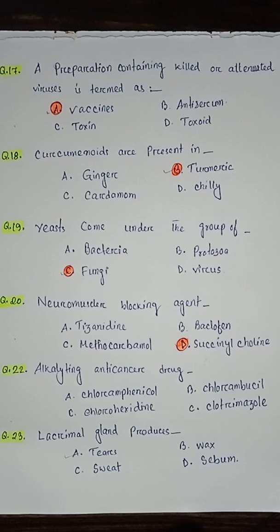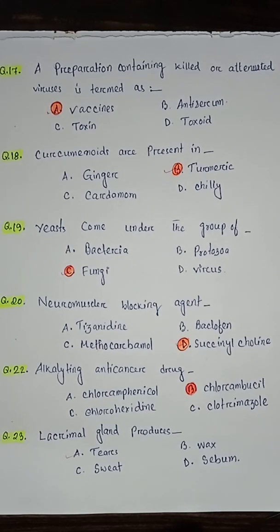Question number twenty-two: alkaline anti-cancer drug is — option A chloramphenicol, option B chlorambucil, option C chlorhexidine, option D clotrimazole. Question number twenty-three: lacrimal gland produces — option A tears, option B wax, option C sweat, option D saliva. So the correct answer is option A tears.